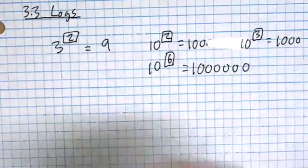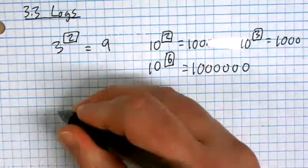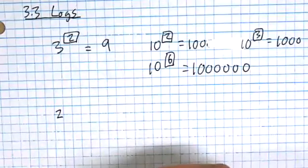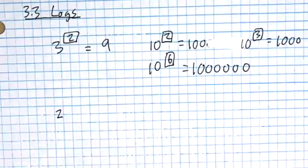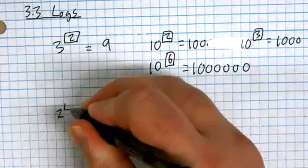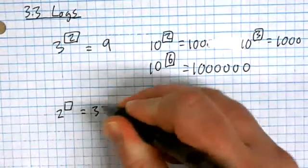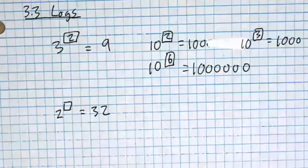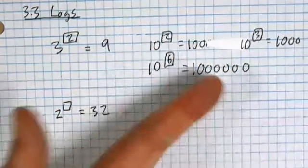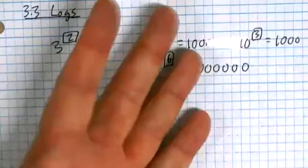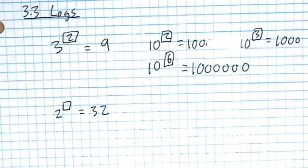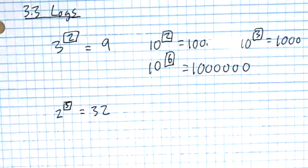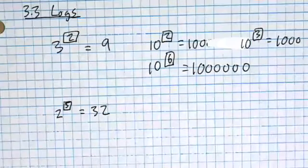What exponent could I put onto a two to make it equal to 32? There's no shame in using your calculator, or you can think through it: two times two is four, times two is eight, times two is 16, times two is 32 — I'm at five. The answer is five.